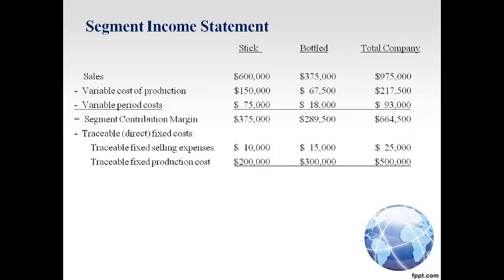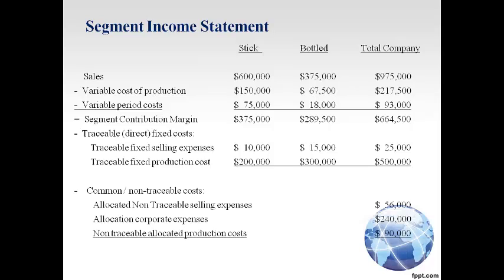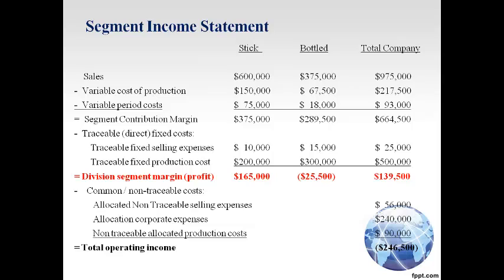The segment contribution margin is the amount that will be added to income from selling products only. Variable and traceable fixed costs will not be incurred if the specific segment is discontinued, while fixed costs do not change as volume changes. Costs incurred to support operations of the total company — referred to as common, non-traceable, or allocated — are reported only in the total column. The division segment margin is the profit that will be lost by the total company if the product line or segment is no longer operated. Segment managers are evaluated based on the division segment profit amount, and total operating income is computed only for the total company column.